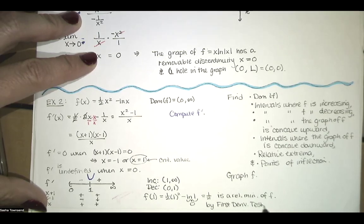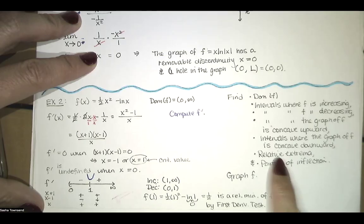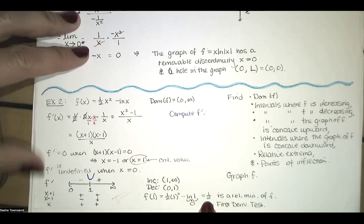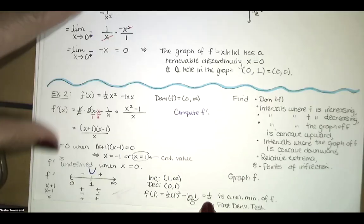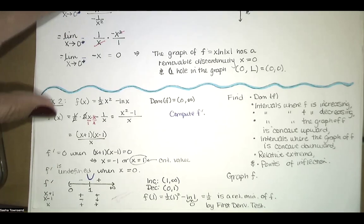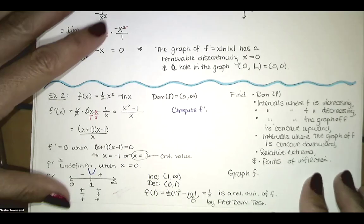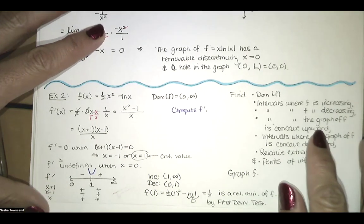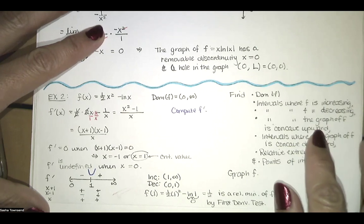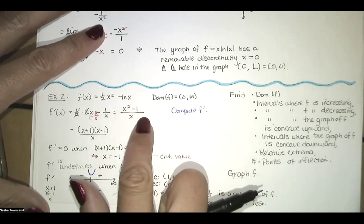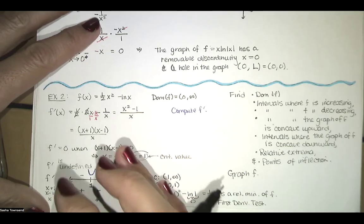So f of 1 equals one half is a relative minimum — we found a relative extremum. Now we're also interested in where the graph is concave upward or concave downward, so we need to take the derivative of f prime to compute the second derivative, and then look at the sign of the second derivative.